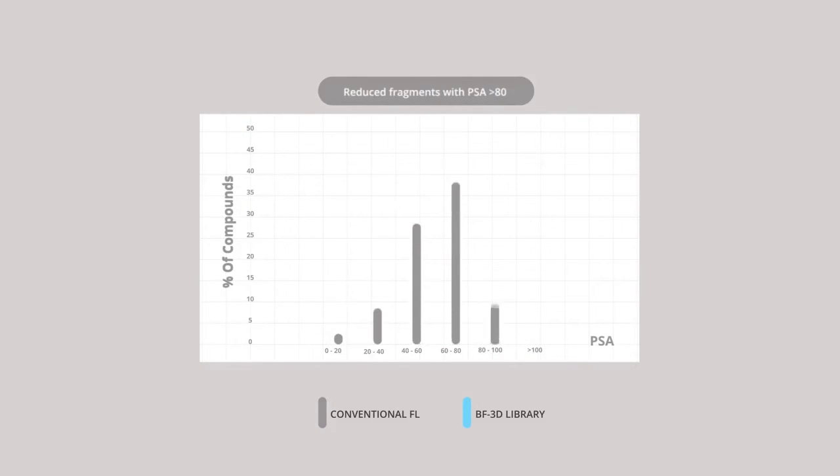On this chart, you can see how the higher degree of sp3 saturation favorably affects polar surface area. 16% of the conventional library lives in the pharmacologically unfavorable range of a PSA of greater or equal to 80, whereas the 3D library contains only 9.5% of such fragments.